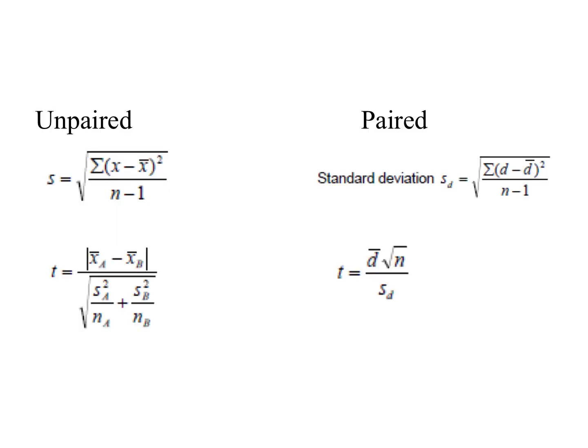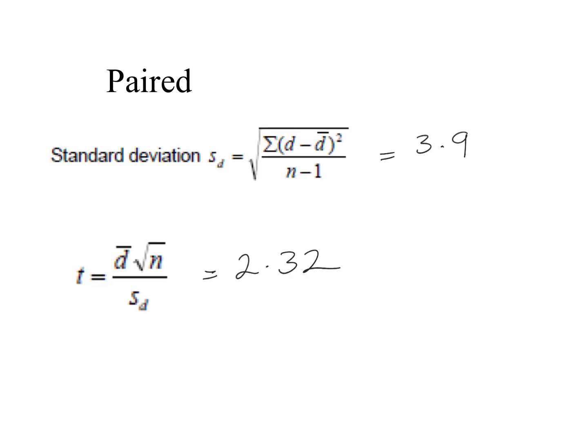Using the paired t-test formulae, take a few minutes to calculate that yourselves first. The standard deviation of the differences should be 3.9 and the paired t-test value should be 2.32. That number by itself doesn't tell us anything — we need to compare it with a critical value to see if it's actually significant.